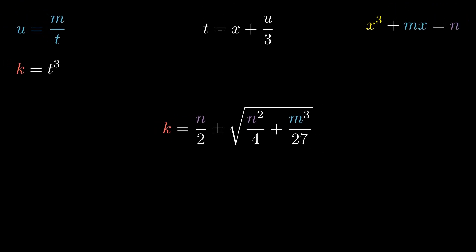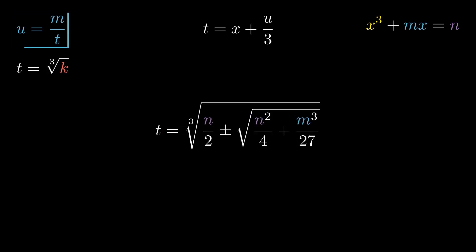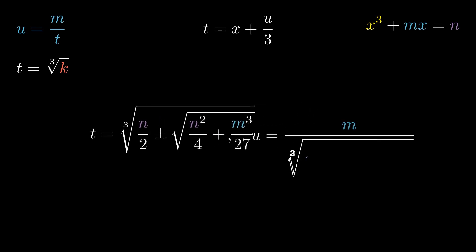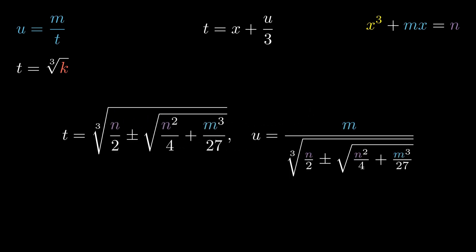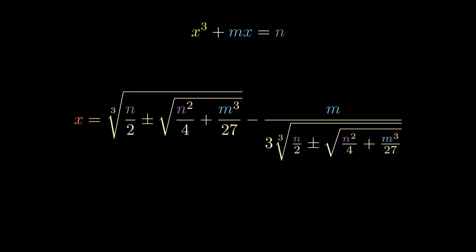Since we know that k equals t³, t has to equal the cube root of k. We can now solve for t, and since u equals m/t, we can solve for it as well. From earlier, we also have that t equals x + u/3. Therefore, x has to equal t - u/3. Solving for x using the equation will give us this general formula for solving depressed cubic equations.